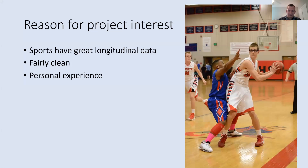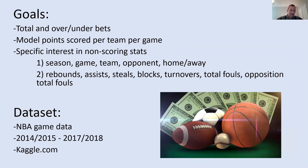With the recent advent of sports betting in Colorado, I thought it would be fun to model something related to betting. One common bet is a total or over-under bet, where you bet how many points will be scored in a game. I wanted to see how well I could model how many points are scored by a team, using time stats like season, game number, team, opponent, and home vs. away, as well as non-scoring statistics like rebounds, assists, steals, blocks, turnovers, and fouls. The data comes from Kaggle.com and covers four seasons.